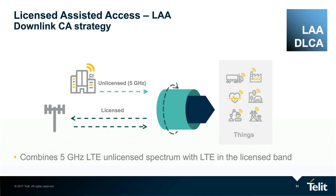Carrier aggregation was one of the three major ingredients we discussed. License Assisted Access is a different type of carrier aggregation introduced in 3GPP Release 13. It uses carrier aggregation in the downlink only, combining LTE in the unlicensed spectrum at 5 GHz with LTE in the licensed band. This means operators with even just one block of 20 MHz of licensed spectrum can deploy gigabit class LTE — it's another tool to achieve the performance.